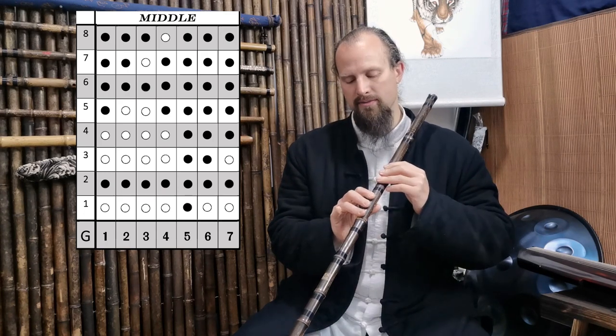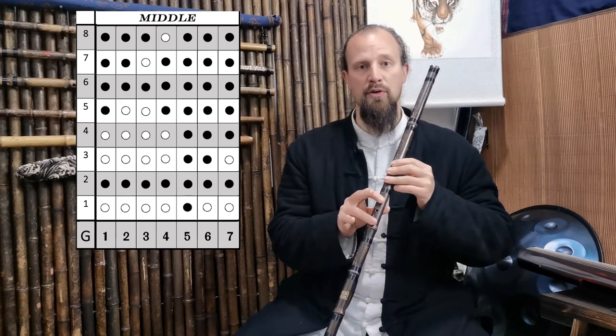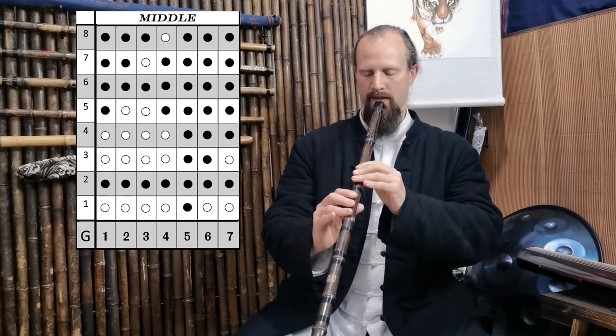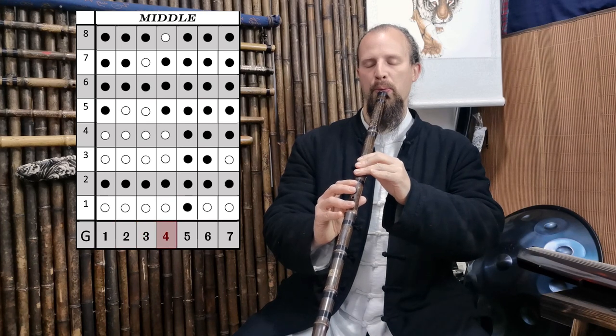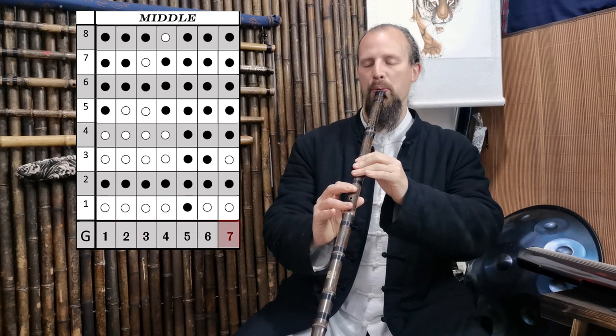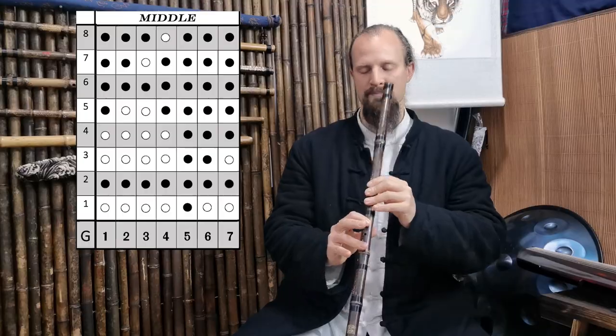So then we go 5, 6 and 7 and we have our full middle register. Then we can move into the high register.